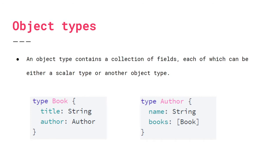What about object types? Object types contain a collection of fields, and these fields can either be scalar types, which we just mentioned, or they can be another object type. So as an example, you have a type book that you defined — this is an object type — and you define fields for this type. I defined a field title and author. Title is a string, which is a scalar type. Author is actually another object type that we defined. So this is another object type used as the type for a field in another object type. In that author object type, there are fields name and books, where name is a string and books is a list of book, which is another object type we defined.